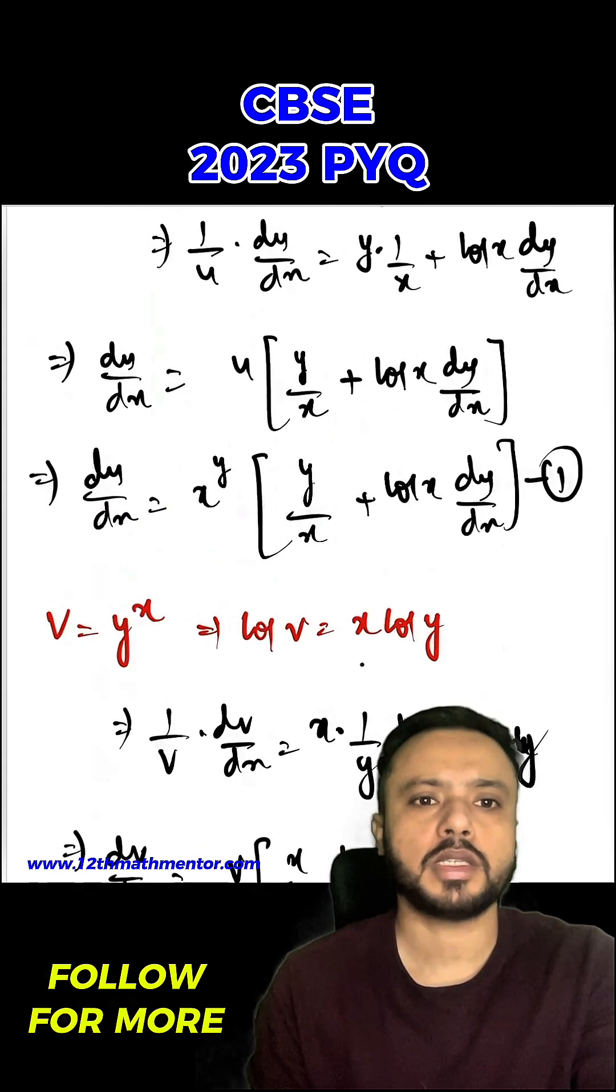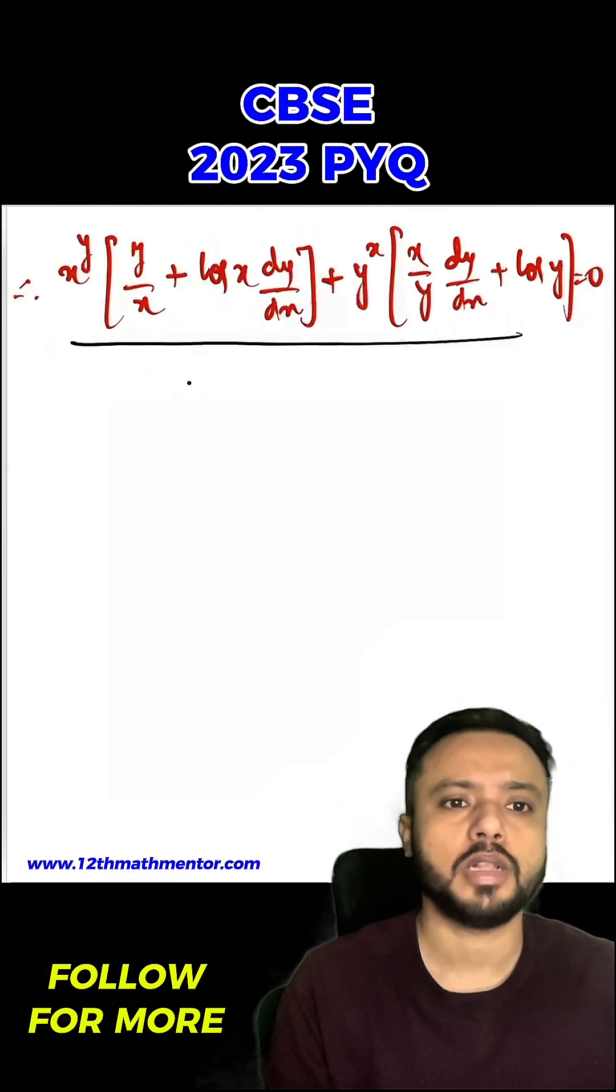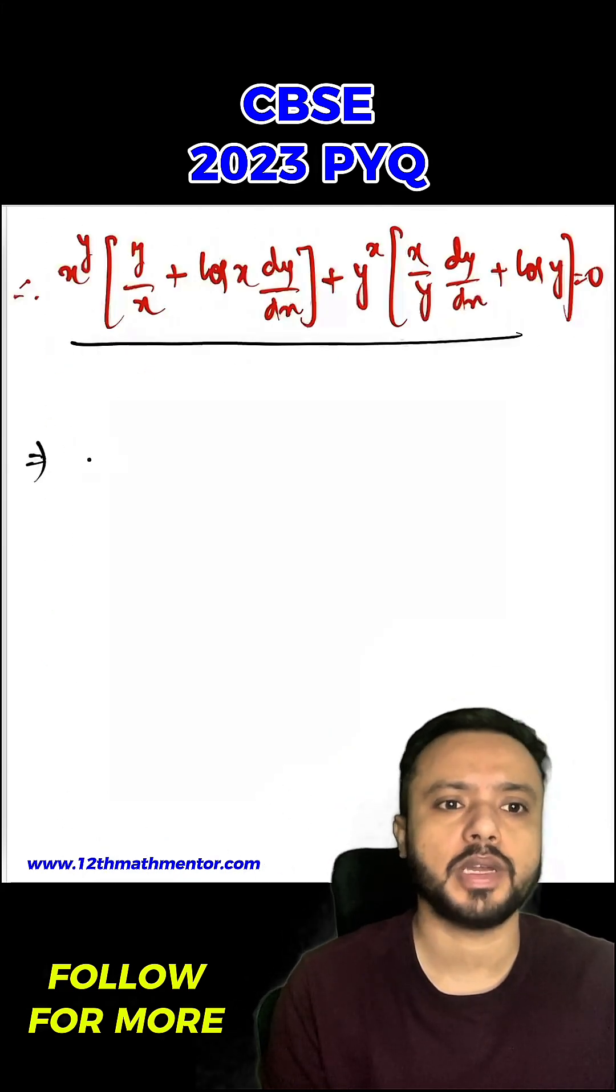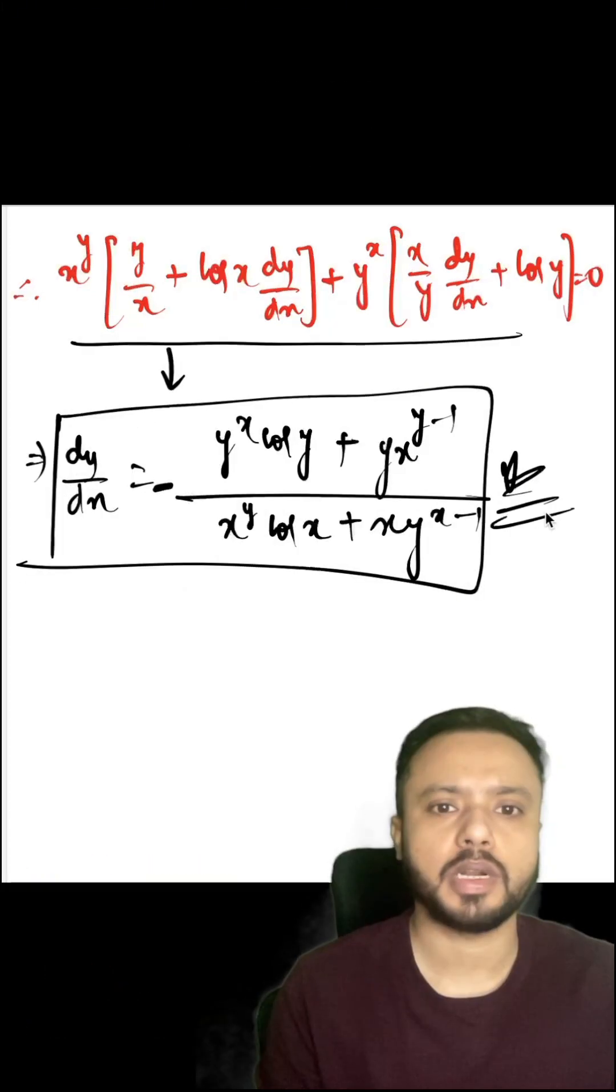Now this dv upon dx and du upon dx value we will put it here and equate it to 0. So after substituting the value I got this. So now I will solve this and find the value of dy upon dx. So when you will simplify this, you will get dy upon dx as this particular thing. So this is my desired answer.